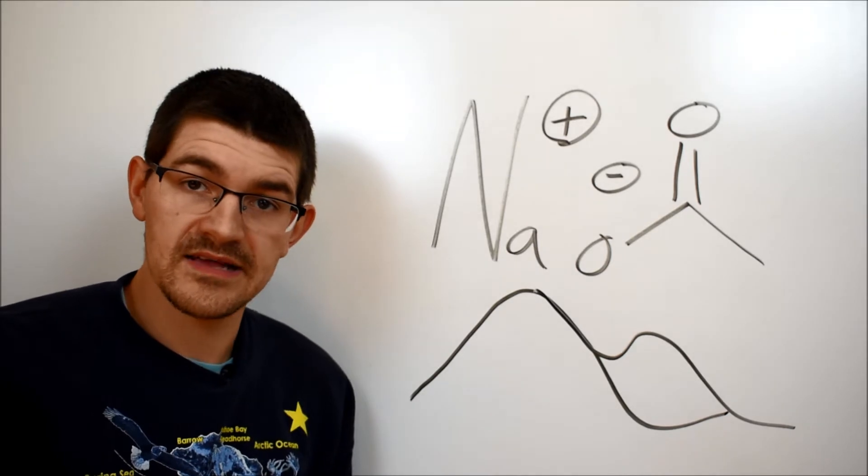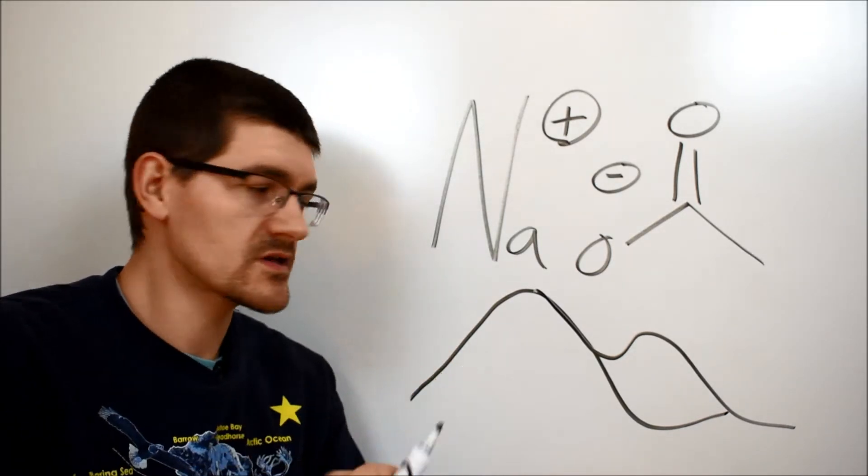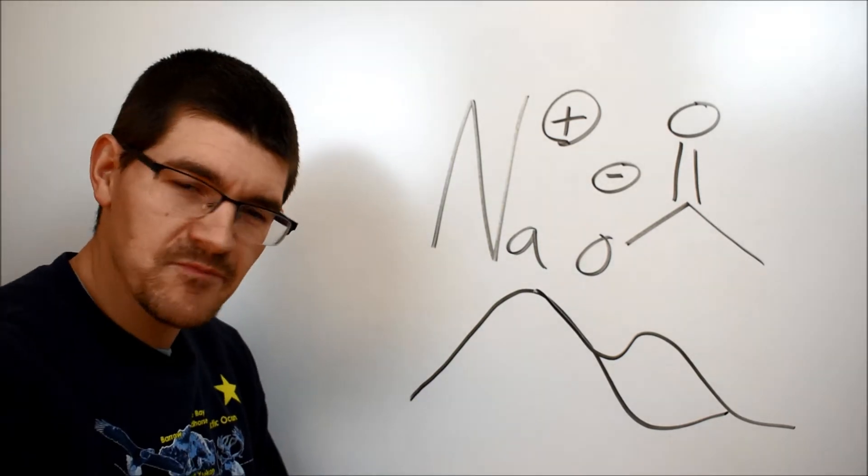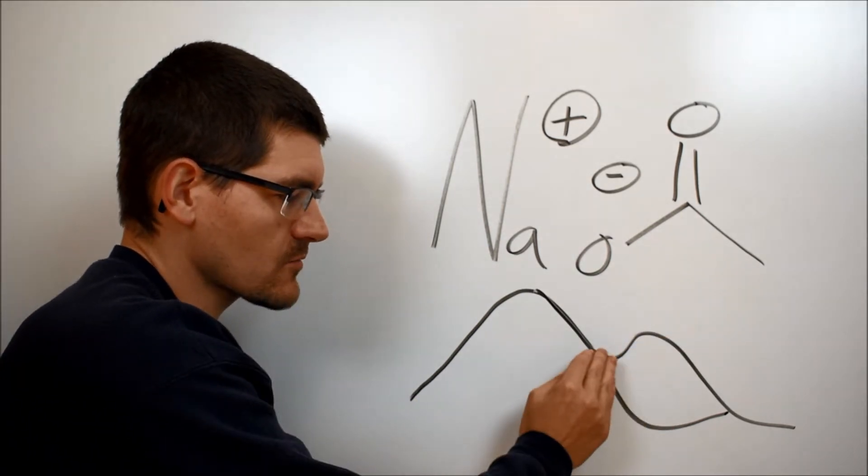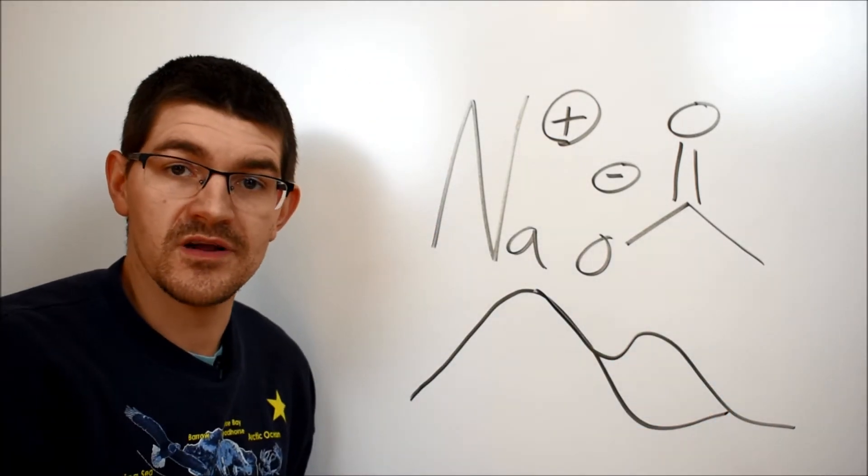That comes in where if you look at the sodium acetate hot packs there's a little clicker in there like a little metal circle that you use to make that happen. When you snap that clicker that's the energy that's required to put that metastable over the hump and then go back down to that equilibrium state.